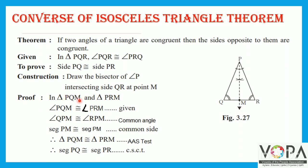Proof: In triangle PQM and triangle PRM, angle PQM is congruent to angle PRM, which is given to you.